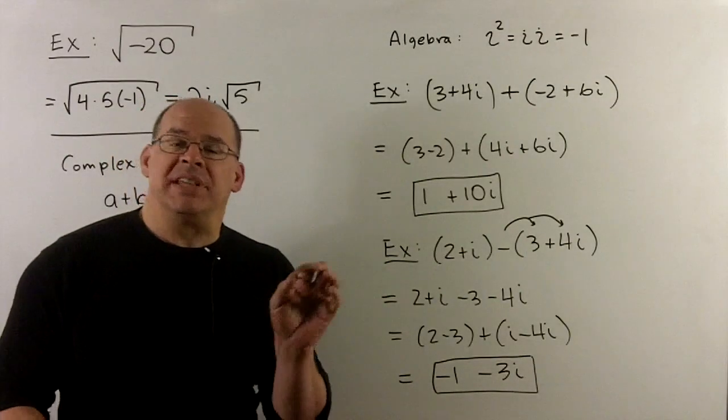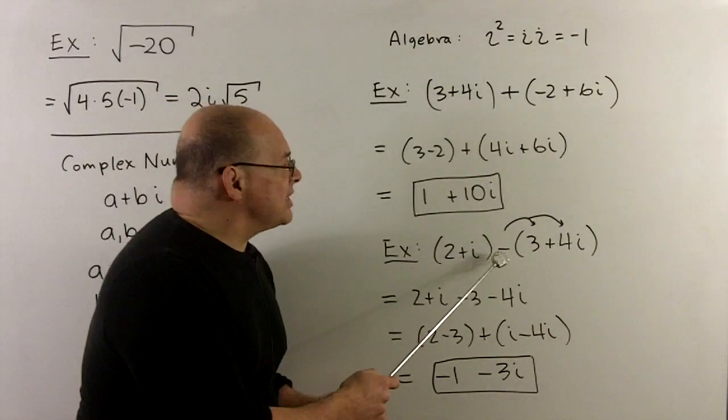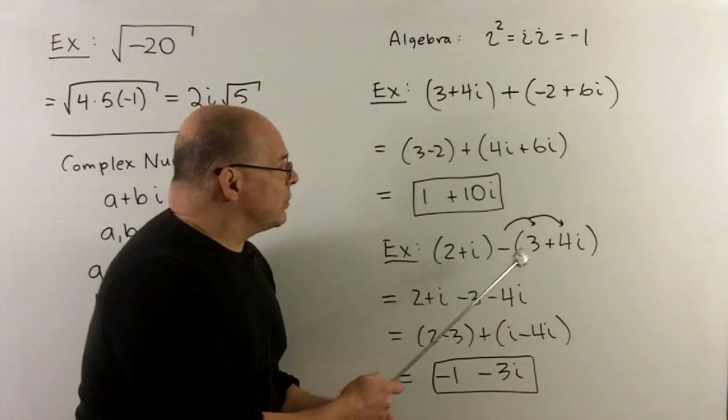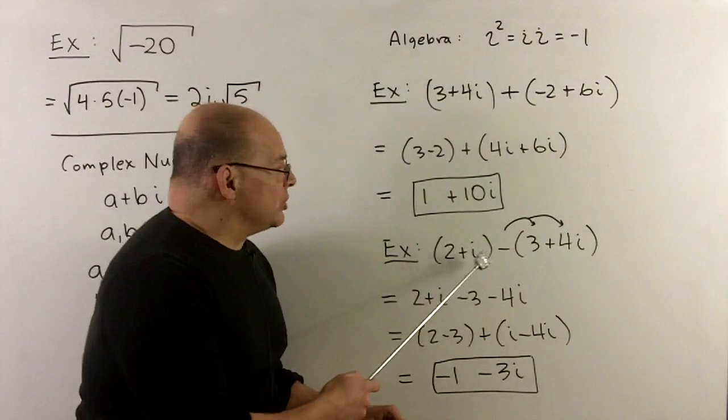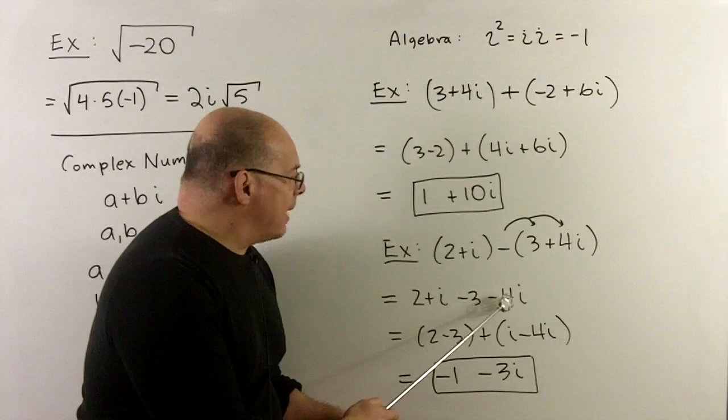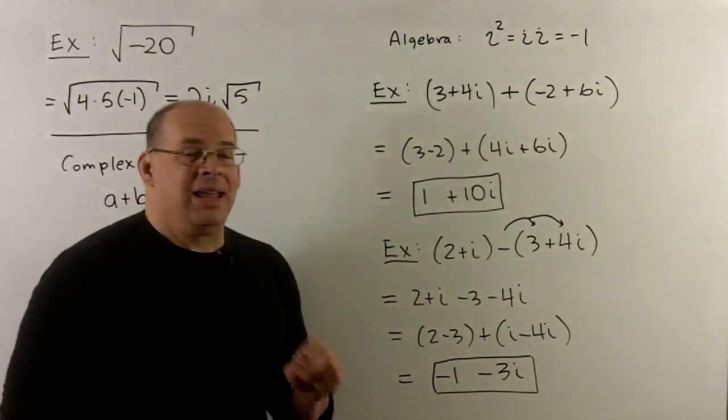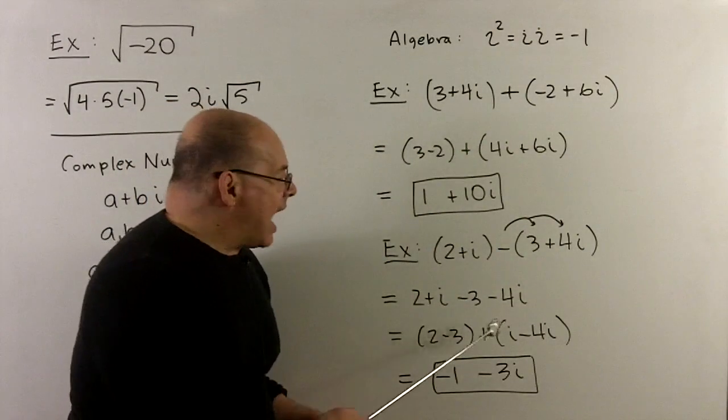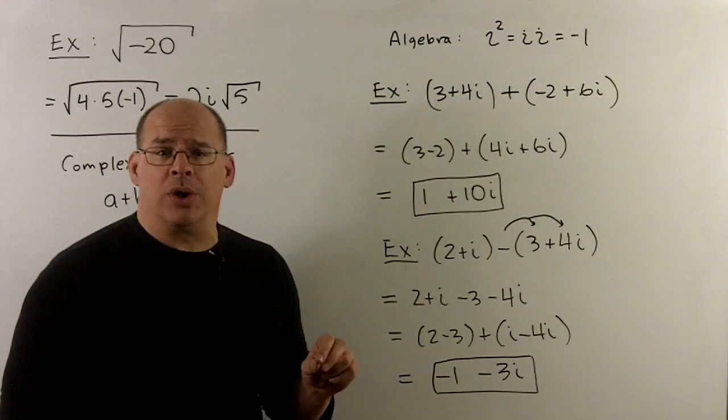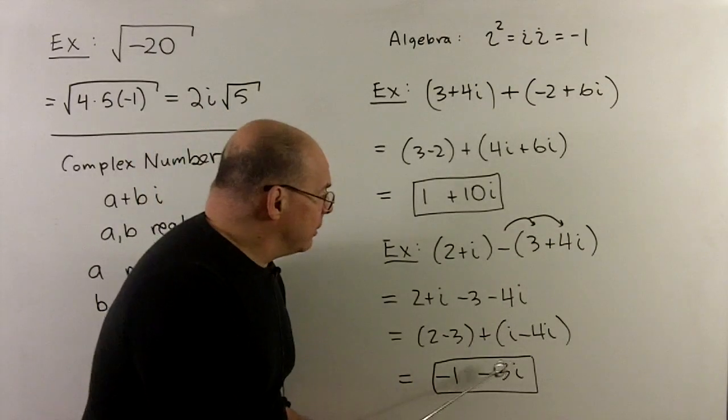For subtraction, same idea. As usual, we have to remember to distribute the minus sign through the parentheses. So, if I have 2 plus i minus 3 plus 4i, we distribute, we'll have 2 plus i minus 3 minus 4i. We put the non-i stuff together, so 2 minus 3. The i stuff goes together, we have i minus 4i. If we factor out the i, we have a 1 minus 4, so I'll get a minus 3. So, we'll have minus 1 minus 3i.